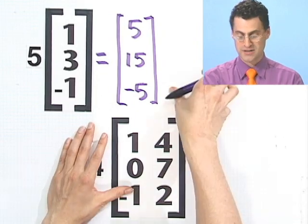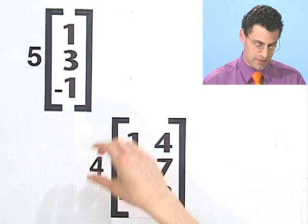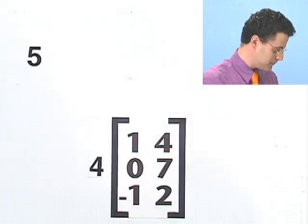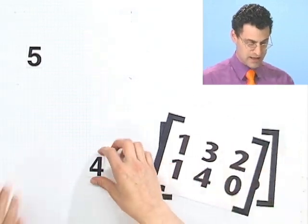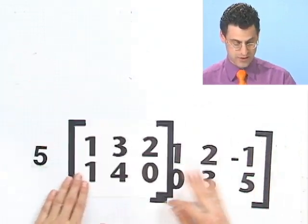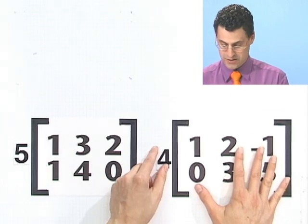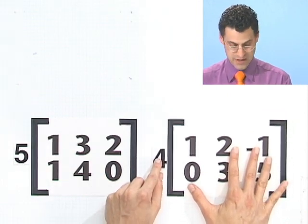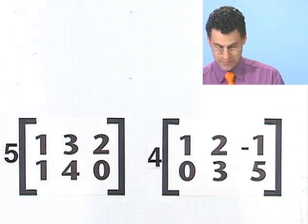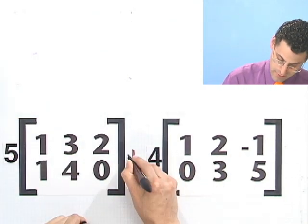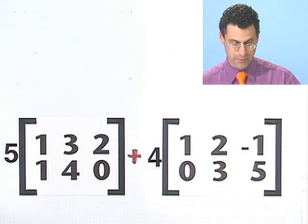So scalar multiplication is not a big deal. Just to illustrate that, in fact, we can combine these ideas together. I could take two matrices, like this, and ask for this operation. Let's take 5 times this, and add it to 4 times this. Let's put a plus sign here.